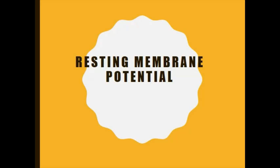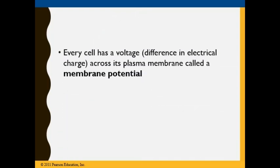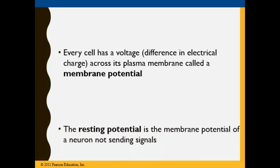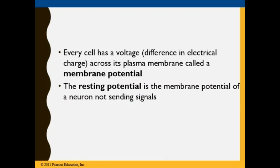The key to understanding how neurons work and how they malfunction is the membrane potential. The membrane potential is the difference in electrical charge between the inside and outside of the cell. Every cell has a voltage — a difference in electrical charge across its plasma membrane called the membrane potential. The resting potential is the membrane potential of a neuron that is not sending signals.